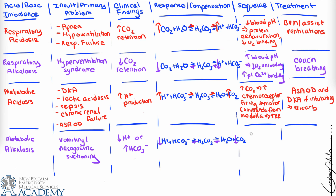In metabolic alkalosis, more CO2 and H2O combine to form carbonic acid, meaning we decrease our CO2. In an extreme sequelae, decreased CO2 leads to decreased chemoreceptor firing, decreased motor commands from the medulla, and could decrease respiratory rate or depth — resulting in hypoventilation. If the patient presents with hypoventilation, we'd assess ventilations with a BVM, but it may be difficult to identify metabolic alkalosis specifically, so other differential causes of hypoventilation must also be considered.